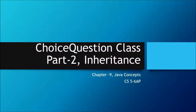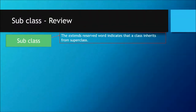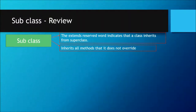This is part 2 on inheritance, focusing on subclasses. We've done two programs already using inheritance and you all know what a subclass is. As a quick review: a subclass uses the 'extends' reserved word, indicating that a class is inheriting from a superclass. The subclass can inherit all the methods that it does not override. In just a few minutes we'll talk about what overriding means.